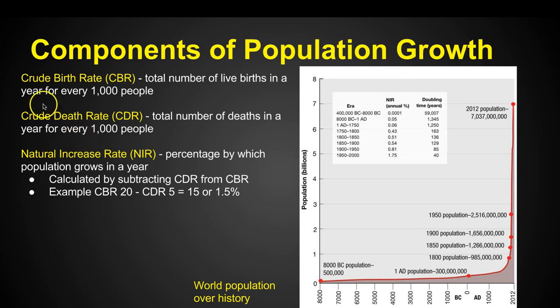First we've got the crude birth rate, or the CBR, which is the total number of live births in a year for every 1,000 people. So basically, how many babies are we having? If we're in a country that's having a lot of babies, then our population is probably going to grow.